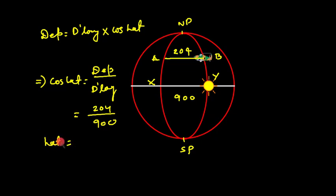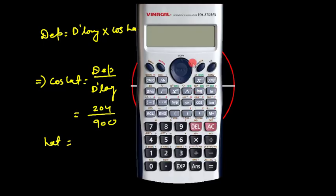Now I'll take the help of a calculator. This is 204 divided by 900, which gives me 0.22.